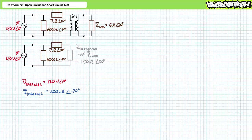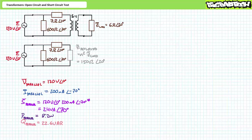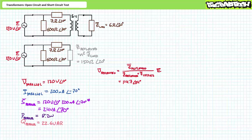The voltage across the parallel impedance inside the transformer equivalent circuit is 120 volts at an angle of 0 degrees. As such, it still draws 200 milliamps of current at an angle of negative 70 degrees. The parallel impedance experiences 24 volt-amperes of apparent power, of which 8.2 watts is directed towards real power and 22.6 VARs towards reactive interchange. The reflected impedance is in series with the series impedance — a perfect setup for the AC voltage divider rule. Applying the AC voltage divider rule demonstrates the reflected impedance experiences a voltage drop of 114.7 volts at an angle of 0.4 degrees.